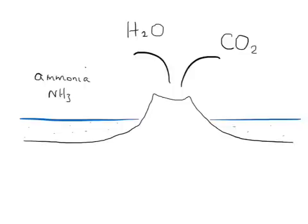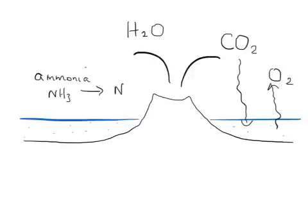As these tiny organisms were capable of photosynthesis, some of the carbon dioxide in the air — and also that which dissolved into the water — were used by these organisms to make oxygen. In that way, the amount of oxygen in the air increased and the amount of carbon dioxide decreased. The water vapour had decreased because it condensed into the oceans. Finally, ammonia was converted into nitrogen gas.